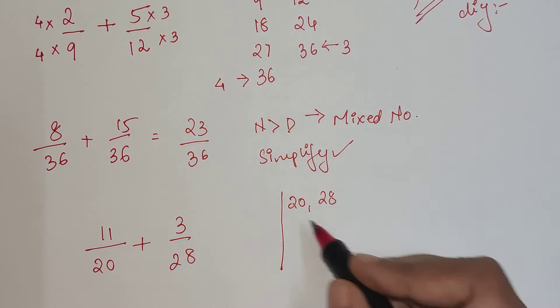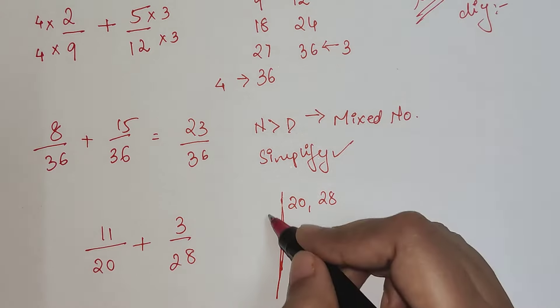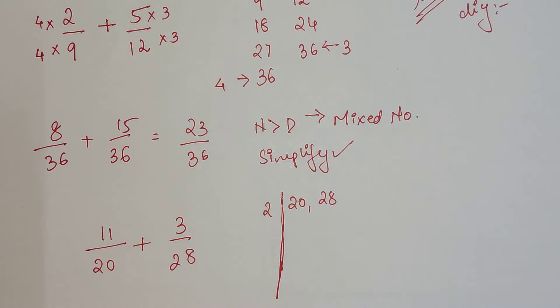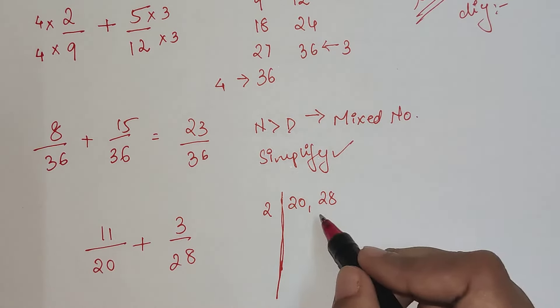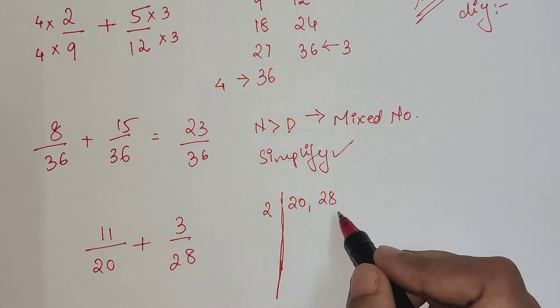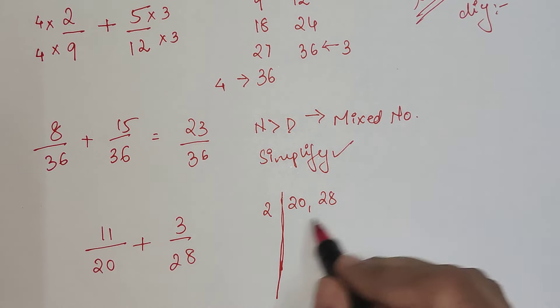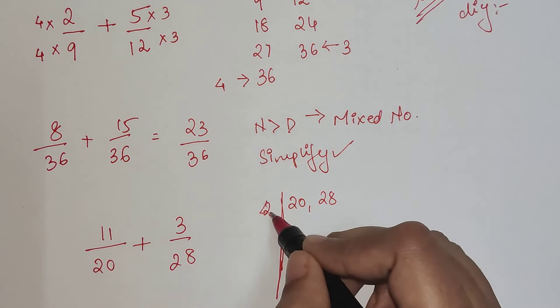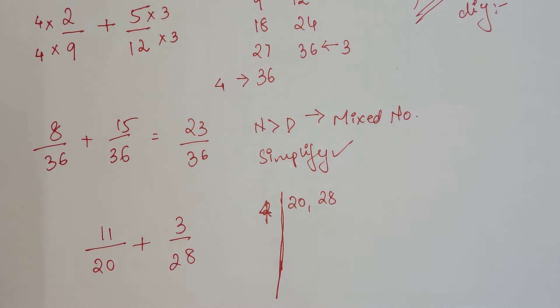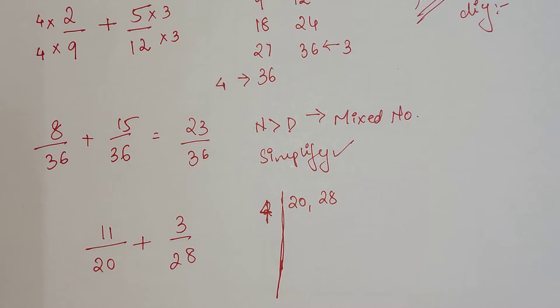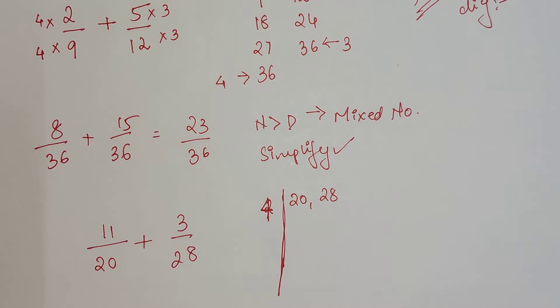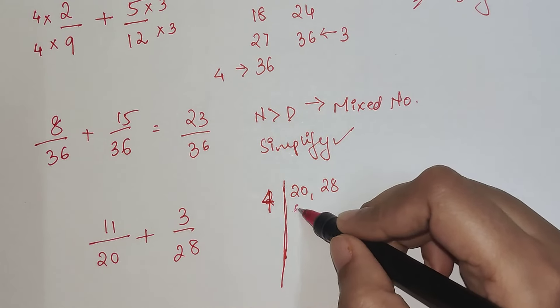So here I would suggest we do factorization of 20 and 28 together. Both are even numbers. You can do this by 2 or by 4, because both are divisible by 4 as well. Whenever I have two even numbers, I check for 4 because it's easier and we save one more step.